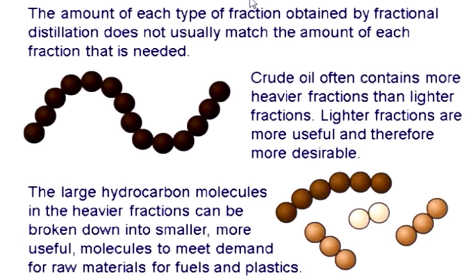Crude oil often contains more heavier fractions than light fractions. Remember, light fractions are at the top and heavier fractions are at the bottom. If you look at page 277, you'll see the heavier fractions are bitumen, lubricating oil, and fuel oil. So crude oil contains more of those, and lighter fractions are less.